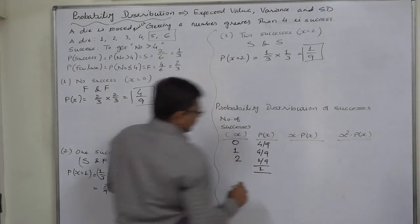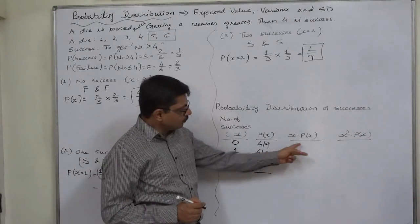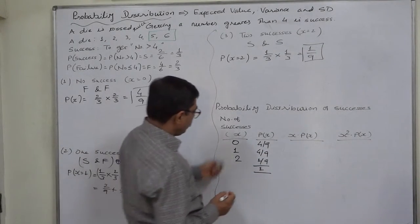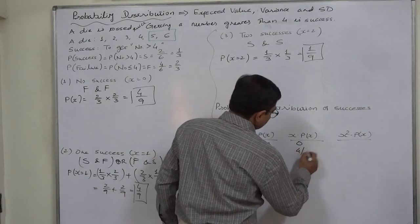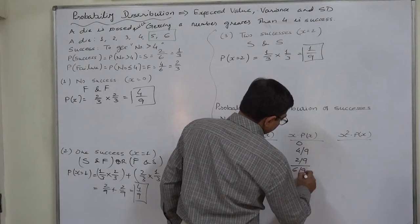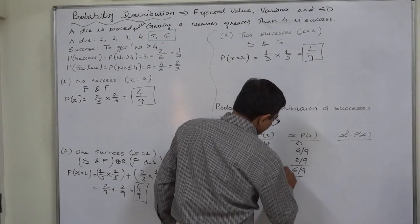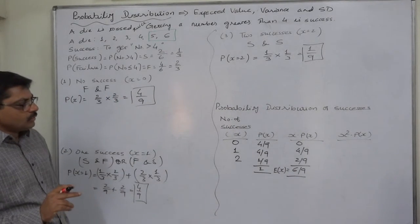Now to find expected value, we have to multiply these two columns, X into P of X: 0 into anything is 0, 1 into 4 by 9 is 4 by 9, and 2 into 1 by 9 is 2 by 9, so it comes to 6 by 9. This is our E of X, expected value of X.